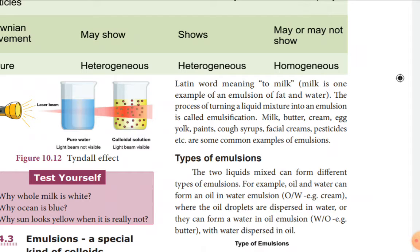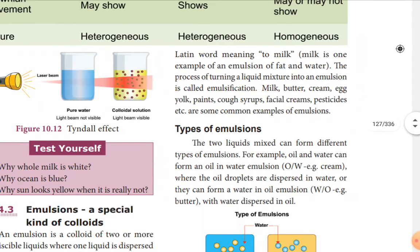Examples of emulsions include milk, butter, egg yolk, paint, syrup, facial cream, and pesticides. There are two types of emulsion: oil in water emulsion (O/W) — example, cream — and water in oil emulsion (W/O) — example, butter.